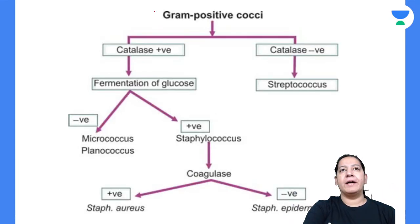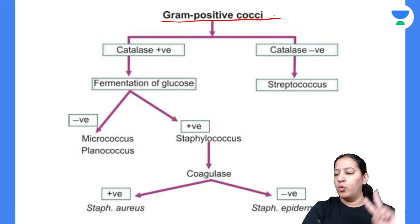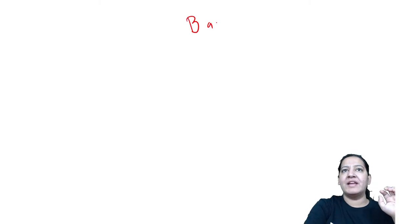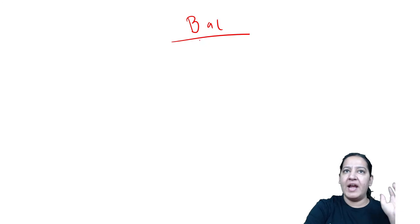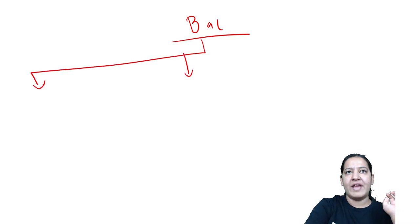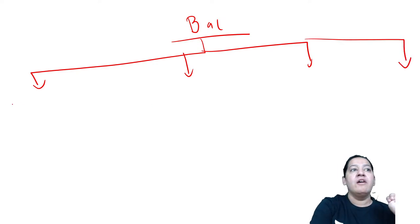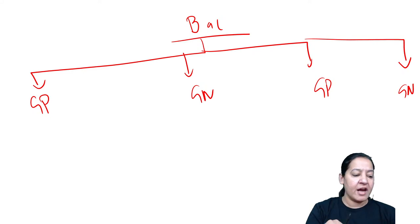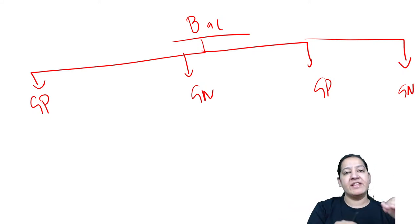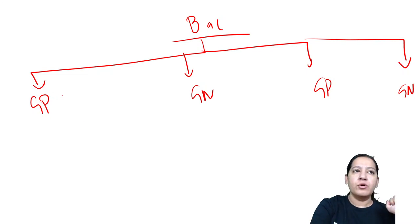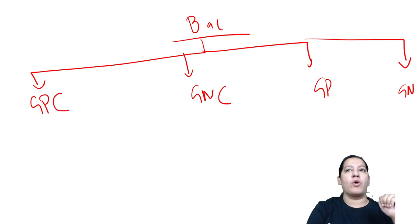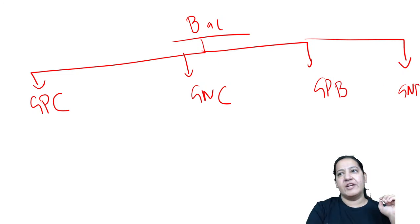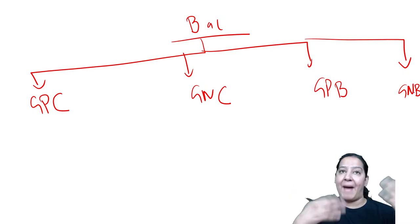We know that gram positive cocci are two in number. In bacteriology, we divide all bacteria into four categories based on two classifications: gram staining (gram positive or gram negative) and the shape — whether they are cocci (spherical) or bacilli (rod shape). So: gram positive cocci, gram negative cocci, gram positive bacilli, and gram negative bacilli.